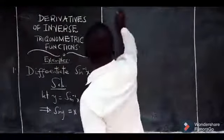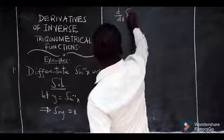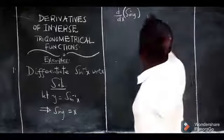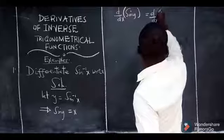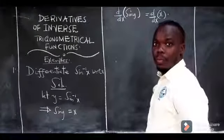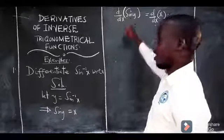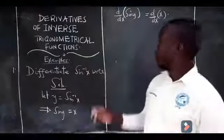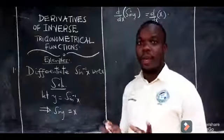Then from this point, we are going to simply differentiate both sides with respect to x. We will have: derivative with respect to x of sine y equals derivative with respect to x of x. Now, when you are differentiating sine y, you need to be a little bit careful, because you have to first differentiate the angle with respect to x, and that will give you dy/dx.